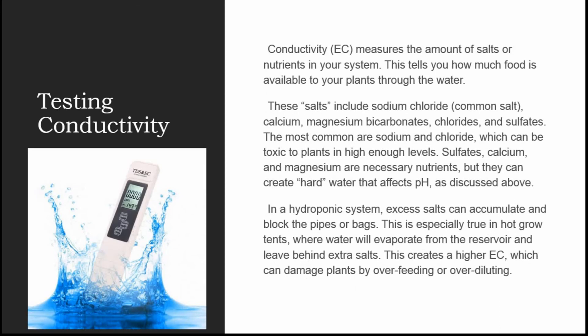Now for testing conductivity: EC measures the amount of salts or nutrients in your system, telling you how much food is available to your plants through the water. These salts include sodium chloride, calcium, magnesium, bicarbonates, chlorides, and sulfates. Sodium and chloride are most common and can be toxic to plants in high levels. Calcium and magnesium are necessary nutrients but can create hard water that affects pH rather than electrical conductivity.